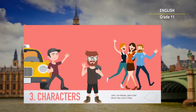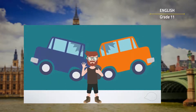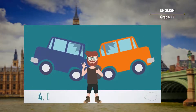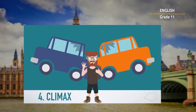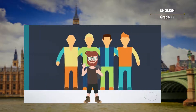The fourth step to telling a story in English is to decide the climax. In other words, you need to come up with an event or situation that will get the attention of the one listening to you. For our example, the climax is a car accident in the middle of the night. The fifth step to telling a story in English is to decide the conclusion.